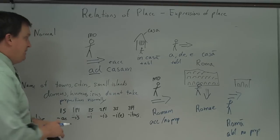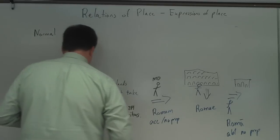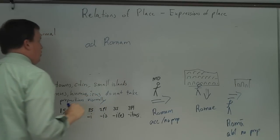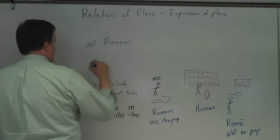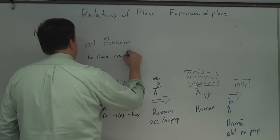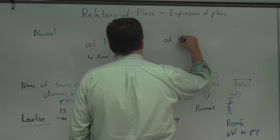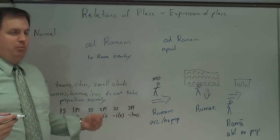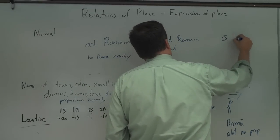Now one thing it does do, sometimes cities, towns, small islands do take a preposition. But it's a different meaning than it's going to Rome. So say if I go ad Romam, what you're saying there is I'm going near Rome, to the vicinity of Rome. I'm not going into Rome. I'm just kind of nearby. So to Rome nearby. And if you can say I'm at Rome, or I'm near Rome, you just say ad Romam again. Or you can say apud Romam. I'm near Rome. And if I'm going away from Rome, but I'm not in Rome itself, I'm like nearby Rome, you can say a Roma.